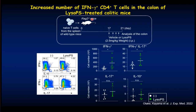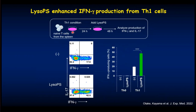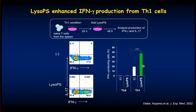Our next question was whether LysoPC directly acts on CD4 T-cells. We performed an in vitro experiment: naive T-cells were isolated and cultured in TH1-polarizing conditions, and one day after culture, LysoPC was added. Addition of LysoPC increased the number of interferon-gamma-producing cells. In this experimental condition, only TH1 cells were present, indicating that LysoPC directly acts on TH1 cells and activates them. When naive T-cells were stimulated with LysoPC, it did not act on naive T-cells at all. Thus, LysoPC specifically acts on TH1 cells.